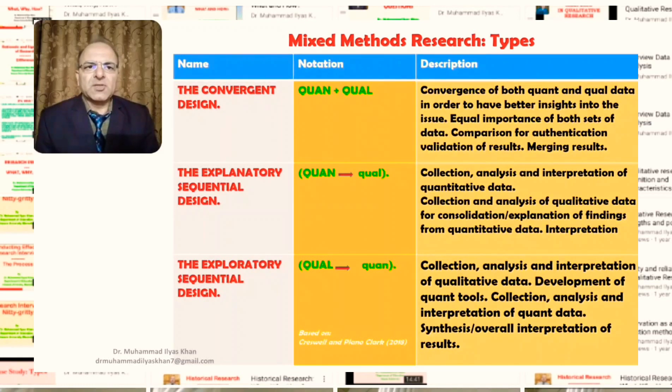begins with the qualitative part of the study, and that's why it is also called exploratory sequential, because the beginning of the research is in exploration. As we know, we conduct qualitative studies when we don't have enough theoretical background related to certain issue. That's why exploration begins.